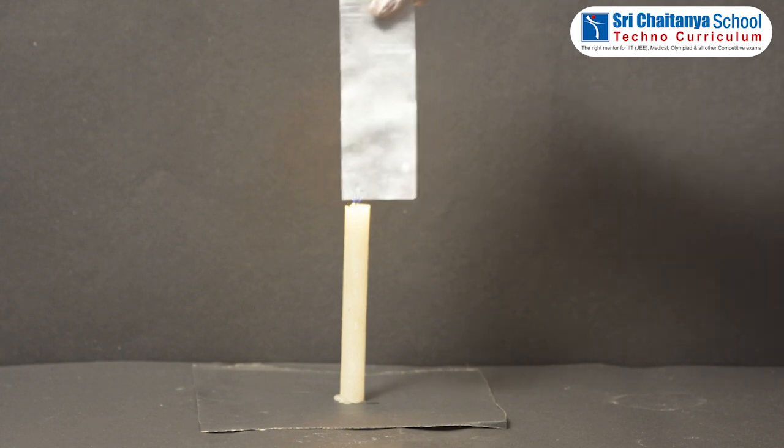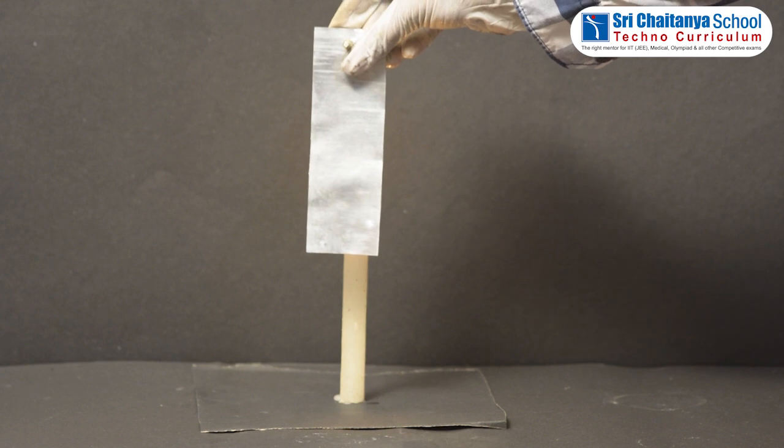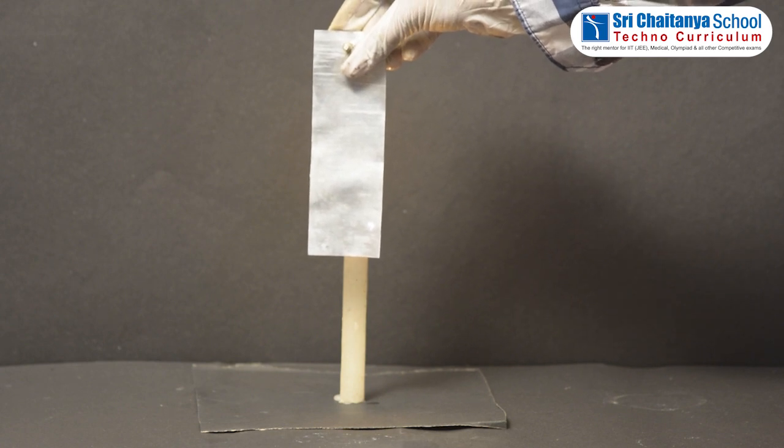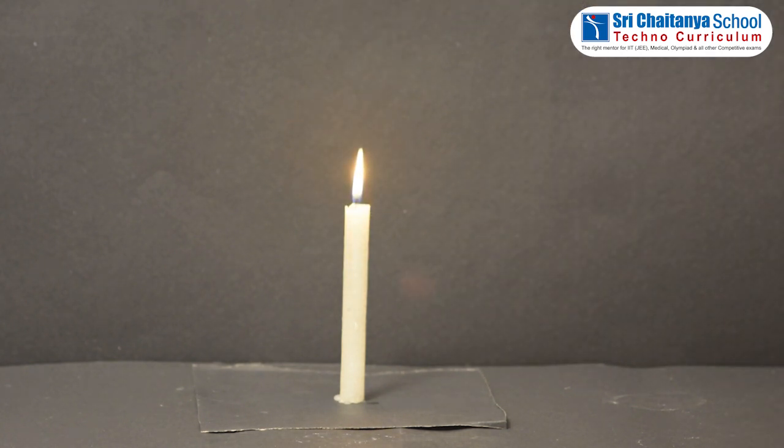Now, use aluminum sheet. What is your observation? Even through this aluminum sheet, we cannot see the lighted candle, so that we can see it as an opaque substance.